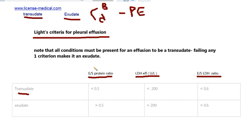In transudate, the effusion over serum protein ratio will be less than 0.5, LDH value will be less than 200 units per liter, and effusion over serum LDH ratio less than 0.6.